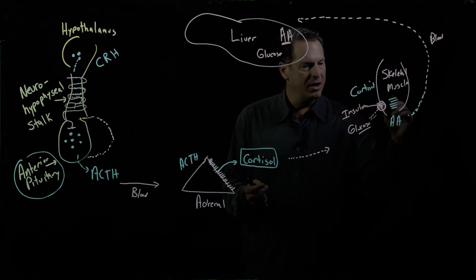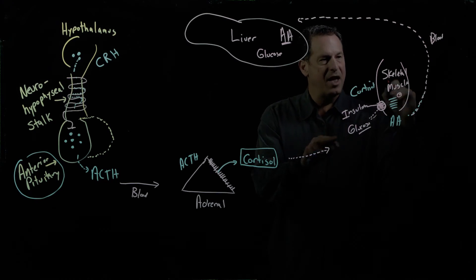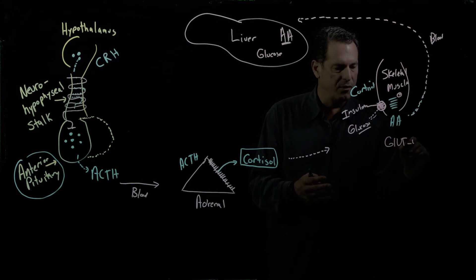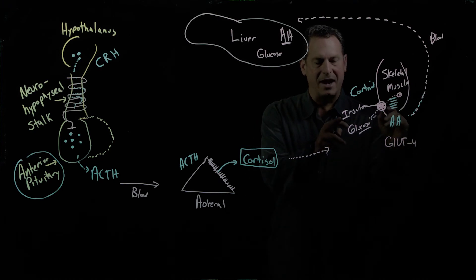and that transporter is called the GLUT4, glucose transporter 4. It kind of works its way up here. Insulin makes that happen.